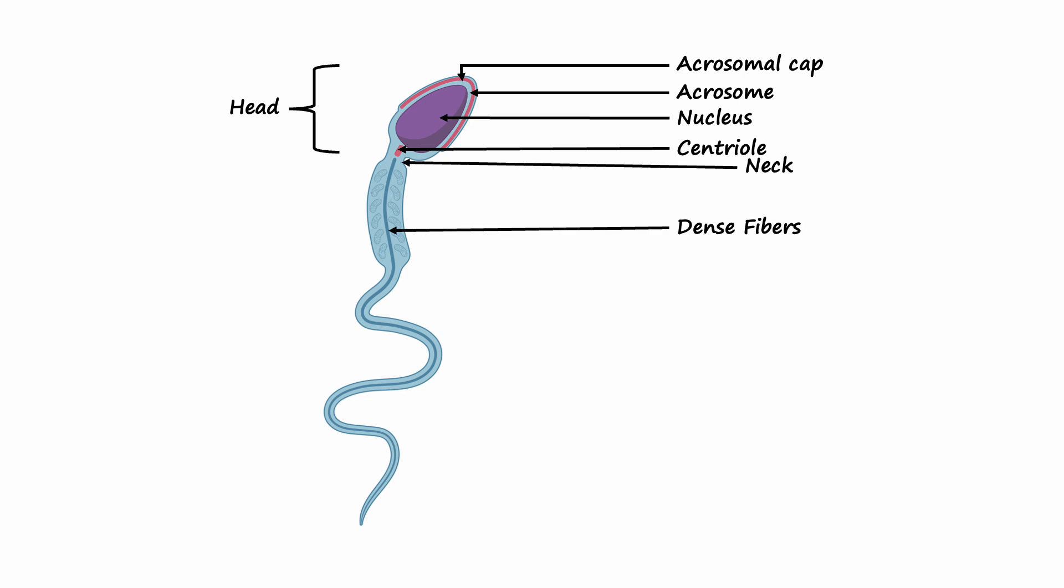Dense fibers: The dense fibers provide structural support to the neck region. They help maintain the shape and integrity of the sperm cell.